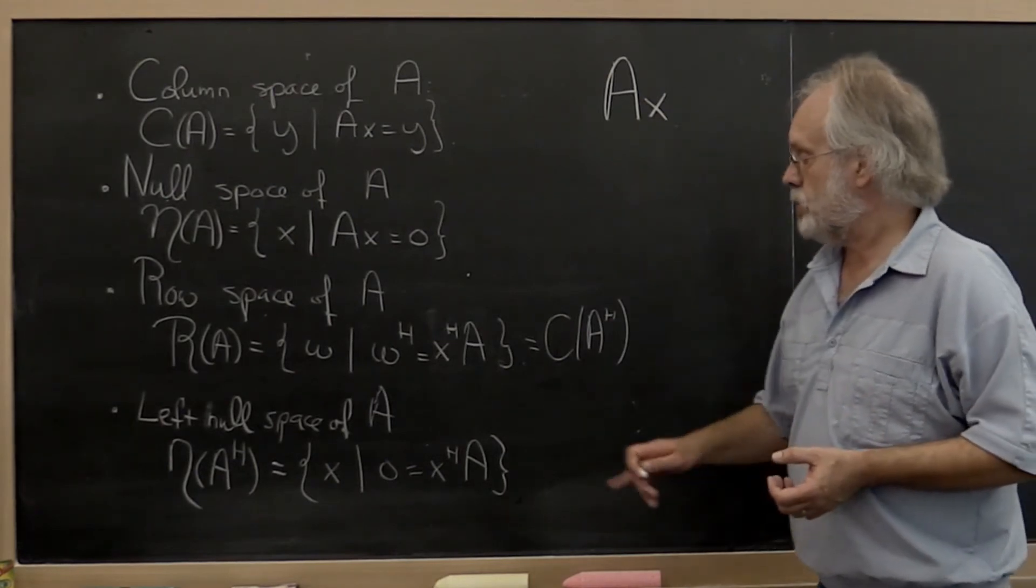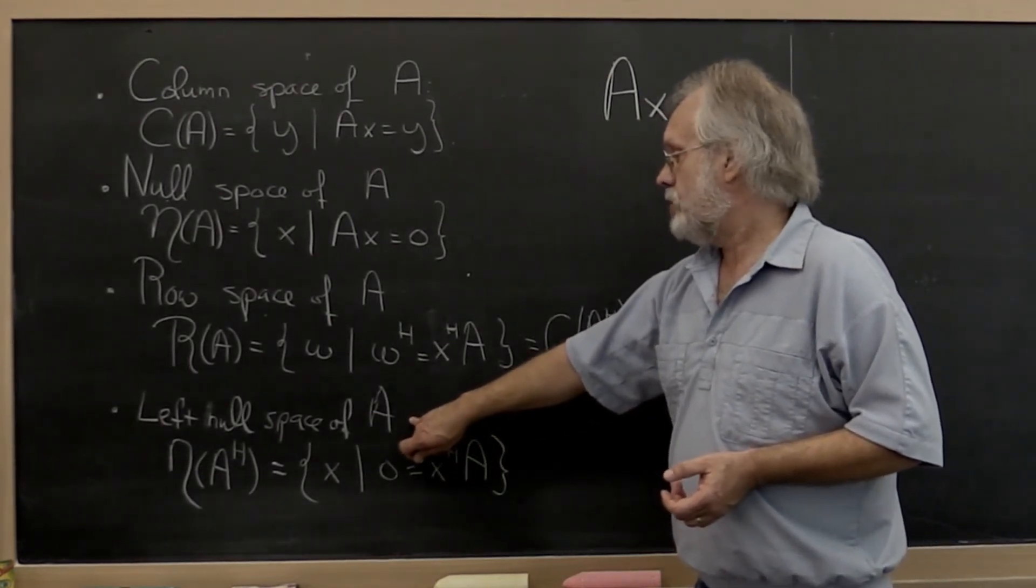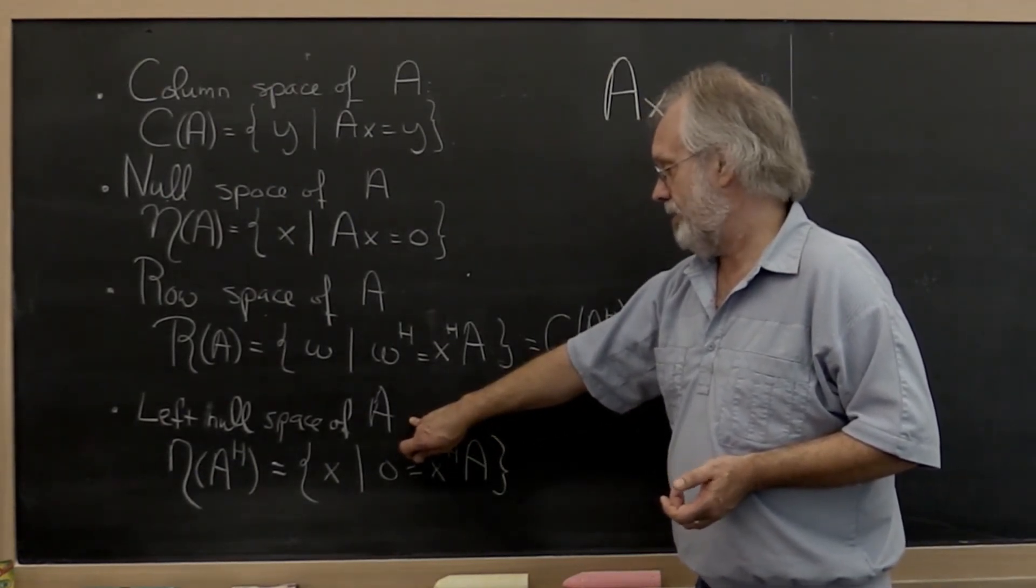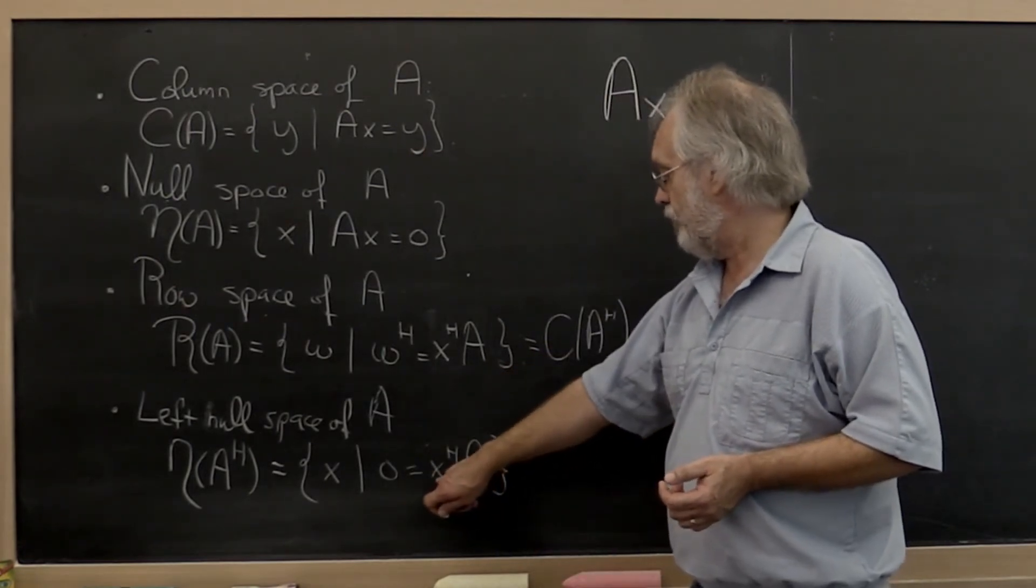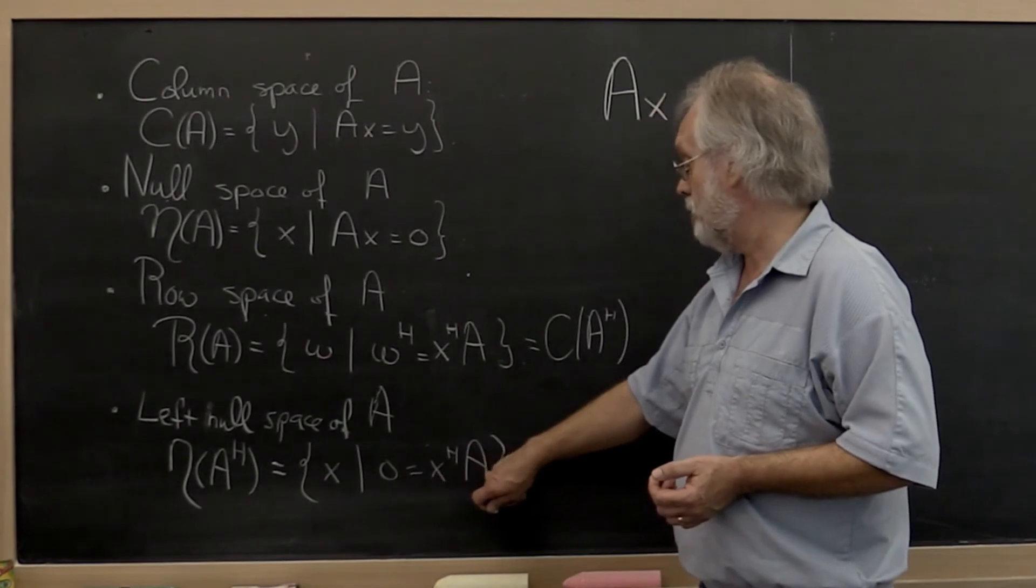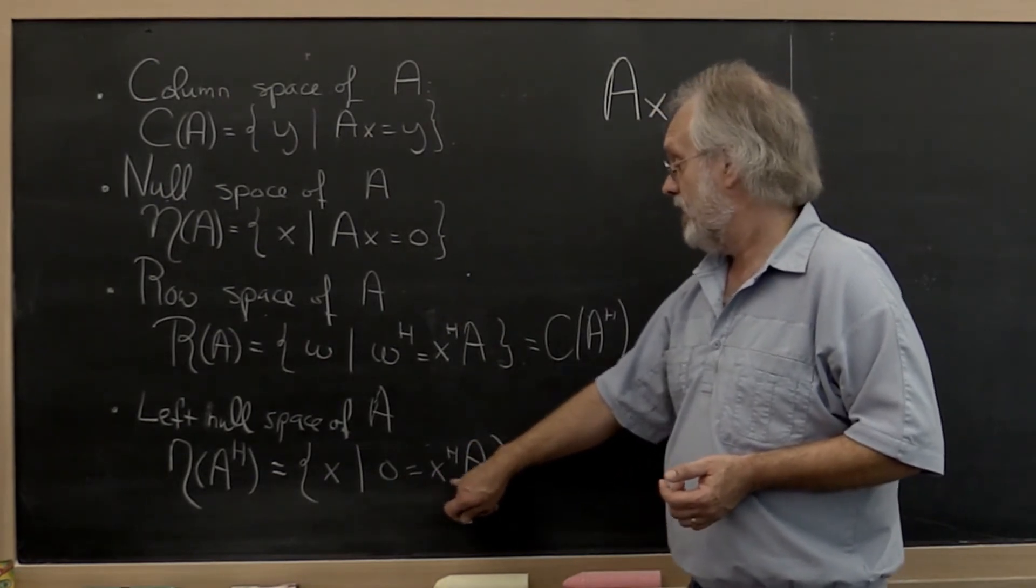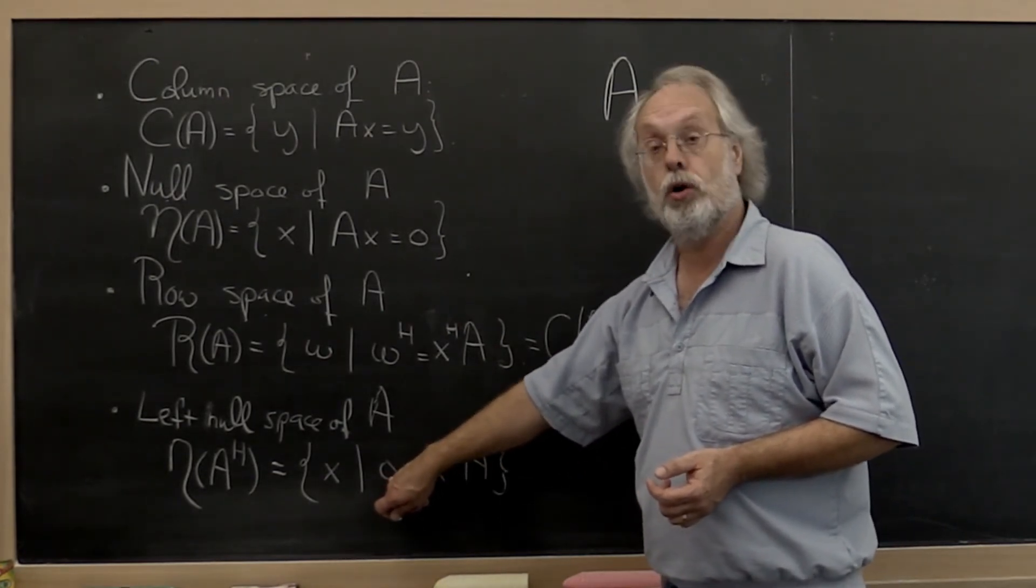And then finally there's one more space and that's known as the left null space of A. And that's the set of all vectors such that if you take it as a row vector and multiply times A from the left, then you end up with the zero row vector.